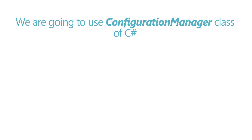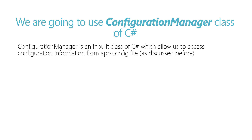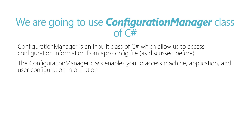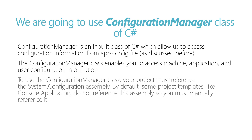We are going to use exactly the same thing this time, but re-modify the code a little bit to customize it based on our requirement. The Configuration Manager is a built-in class of C# which allows us to access configuration information from the app.config file. To use it, your project must reference the System.Configuration assembly. By default, some project templates like console applications do not reference this assembly, so you must manually reference it. Our project already has this reference from our previous work in the configuration section.